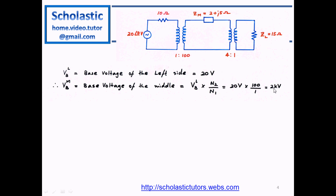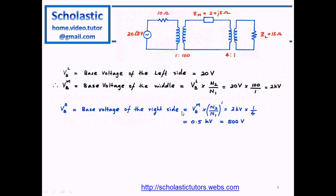VBL is 20 volts, and n2/n1 equals 100, so VBM equals 2 kV — the base voltage of the middle section. Now for the right side: VBR equals VBM multiplied by the turns ratio of the second transformer. This is a step-down transformer, so n2/n1 equals 1/4, giving VBR equals 0.5 kV, which is equal to 400 volts.